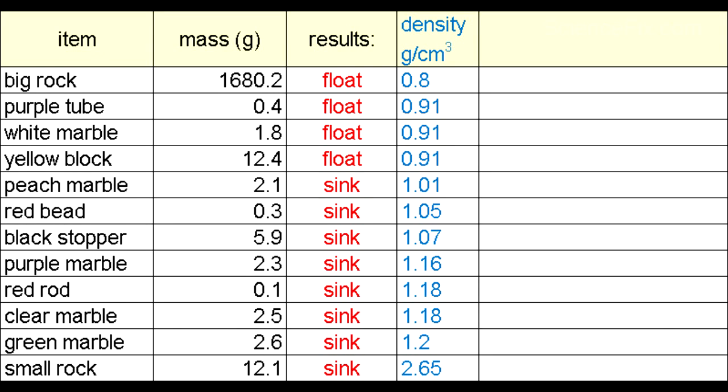Well now it becomes really apparent. It looks like the items that have a density of less than 1 float in water, and those items that have a density greater than 1 sink in water. It's really obvious by this arrangement of the data.